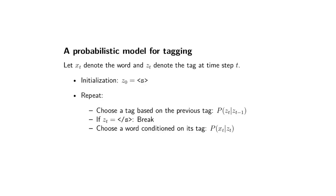I will tell you a generative story for generating words where we know something about the part of speech categories underneath. The story goes like this: we start by generating the start of a sentence, and then we repeat the following steps. First, you choose a tag — something like a noun, a determiner, or a verb — based on the previous tag. When we start the story, the previous tag is the start-of-sentence symbol, and we sample a new tag given that the previous tag was the start of the sentence.